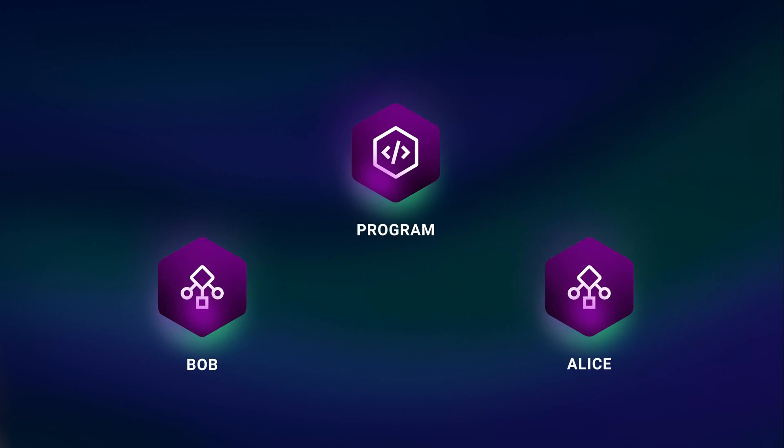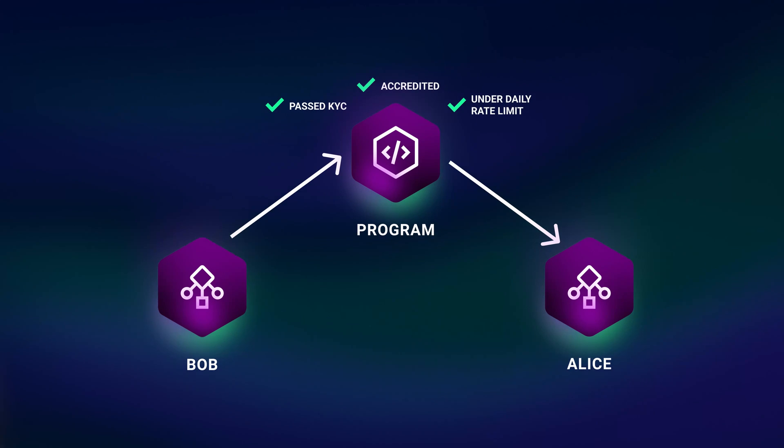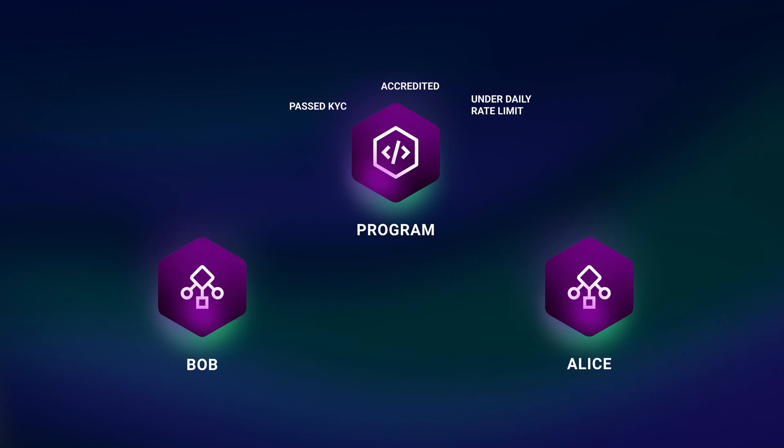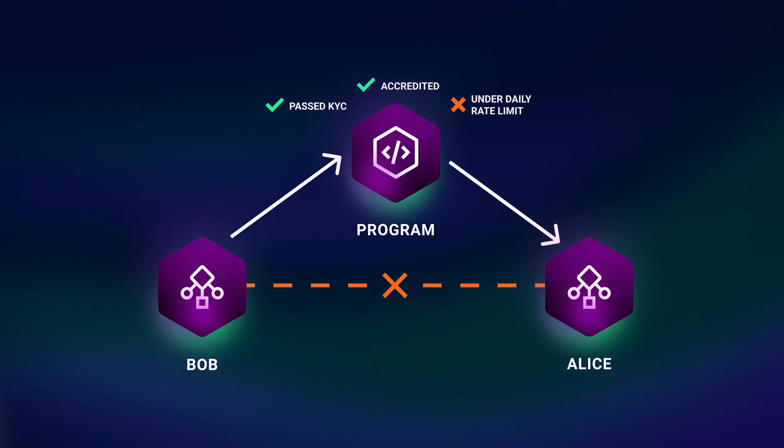Let's talk about transfer hooks. Transfer hooks are a powerful new extension that give token issuers greater ability to dictate how tokens and users interact. Token issuers can designate a specific program that is invoked every single time a token is transferred. The program, called by the transfer hook extension, can determine whether the transfer is allowed based on a whole host of criteria from on-chain sources. This flexible design empowers developers to build complex token interactions, and because the transfers happen at the token program level, it can't be bypassed.